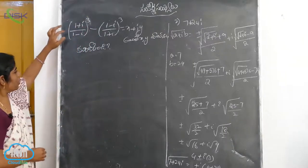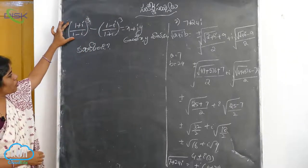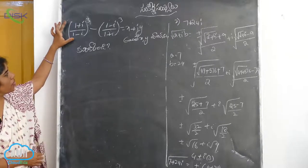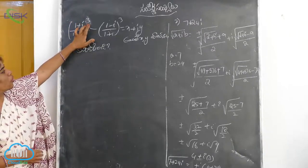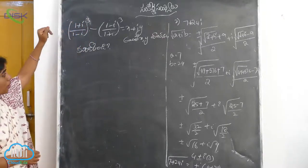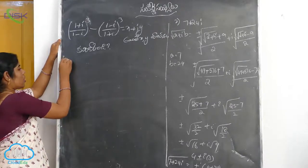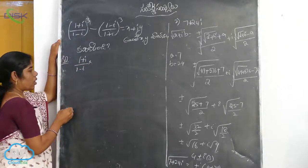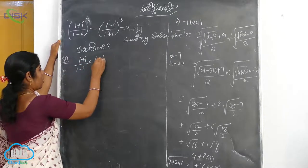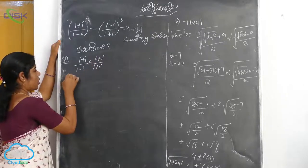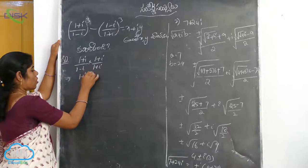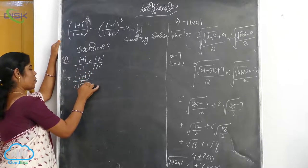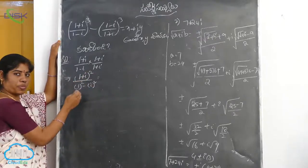Now let us take the first one. We will take (1+i)/(1-i). We multiply by (1+i)/(1+i) — that is, multiply by the conjugate. Using the (a-b)(a+b) = a² - b² formula in the denominator and (a+b)² in the numerator.